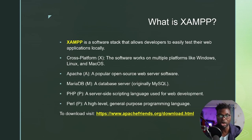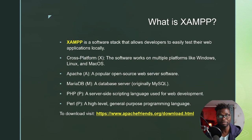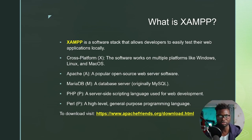First up, XAMPP. XAMPP is a software stack that allows developers to easily test their web applications locally — on their own computer. X stands for cross-platform (Windows, Linux, Mac OS), A is for Apache web server, M is for MariaDB (originally MySQL), the first P is for PHP, and Perl is a high-level general-purpose programming language.